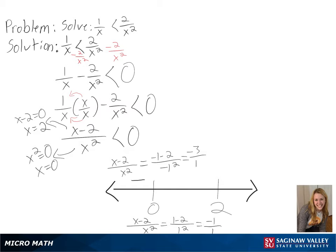Finally, a number we can test to the right of 2 is 3, and we will get a positive number over a positive number, or a positive number.